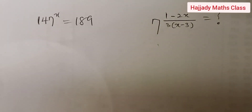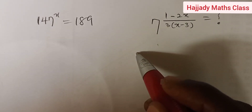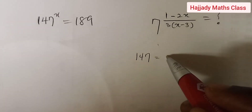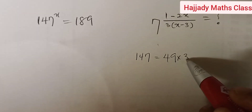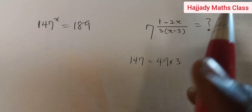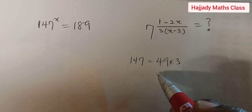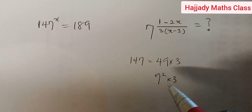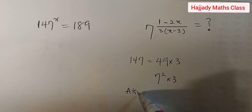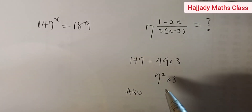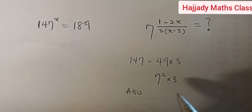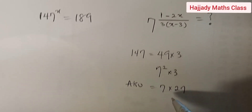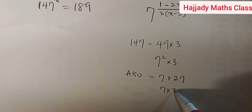For us to do this, we note that 147 can be written as the multiple of 49 and 3, so 49 can be written as 7 raised to power 2, multiplied by 3. Also, 189 can be written in the form of 7 multiplied by 27, and 27 can be written in the form of 3 raised to power 3.